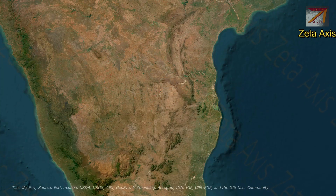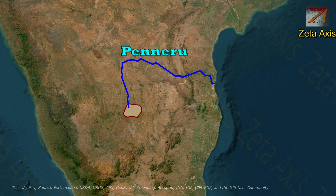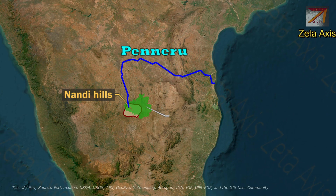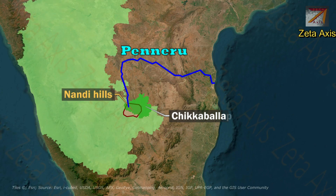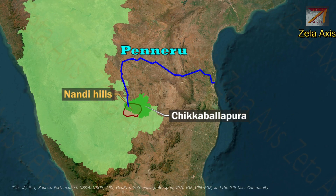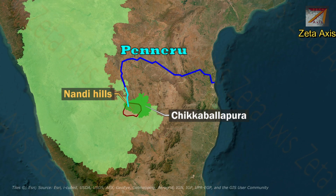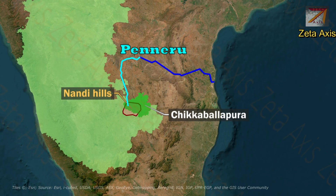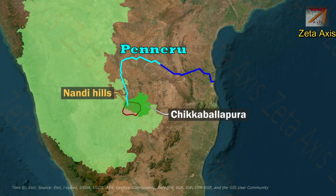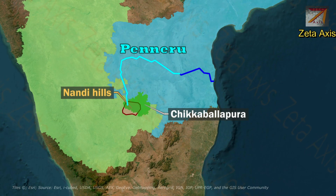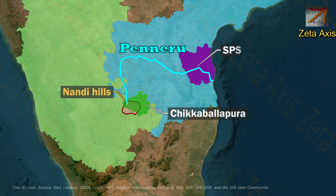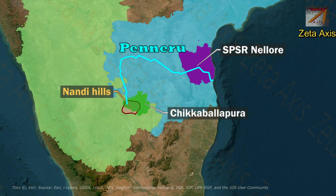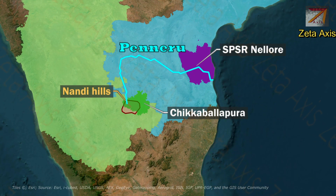Now let's discuss about the Penneru River. The Penneru River rises in Nandi Hills in Chikabalapur district of Karnataka state. It runs in a north direction and then east direction through the states of Karnataka and Andhra Pradesh to flow into the Bay of Bengal in Nellore district of Andhra Pradesh.